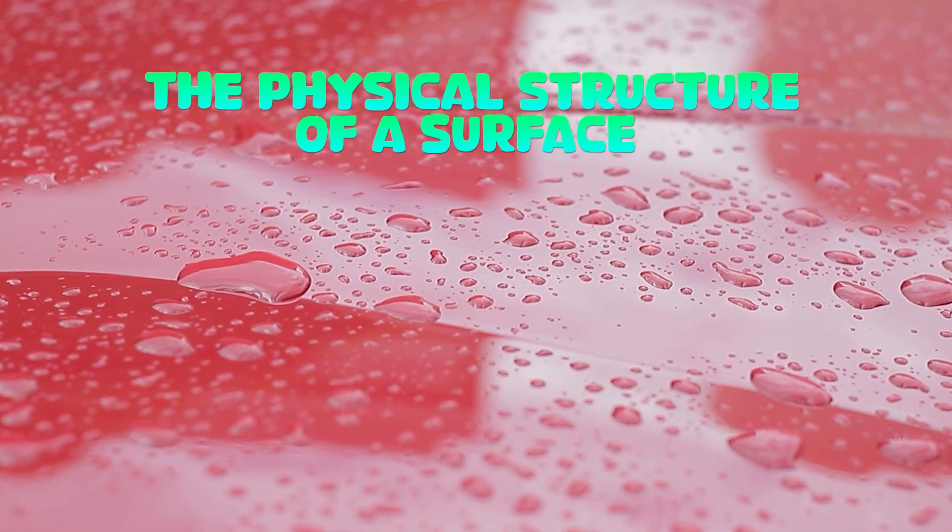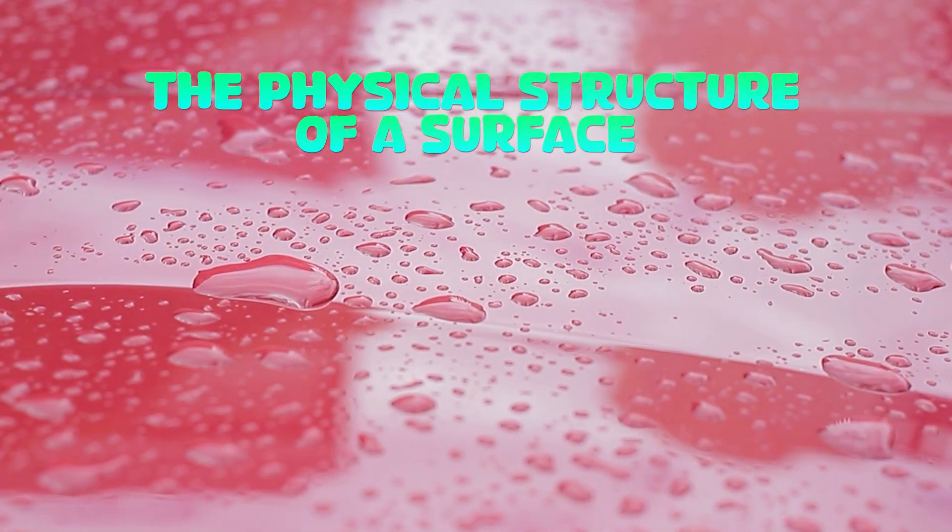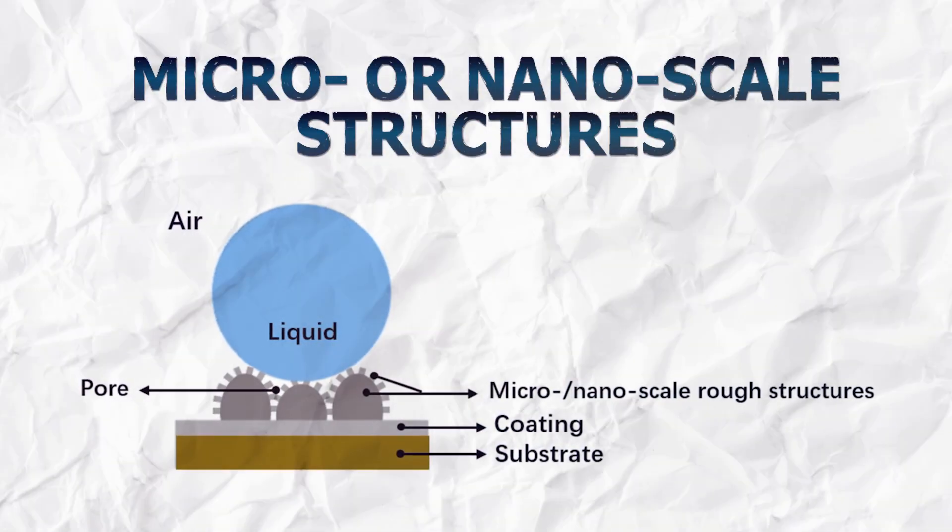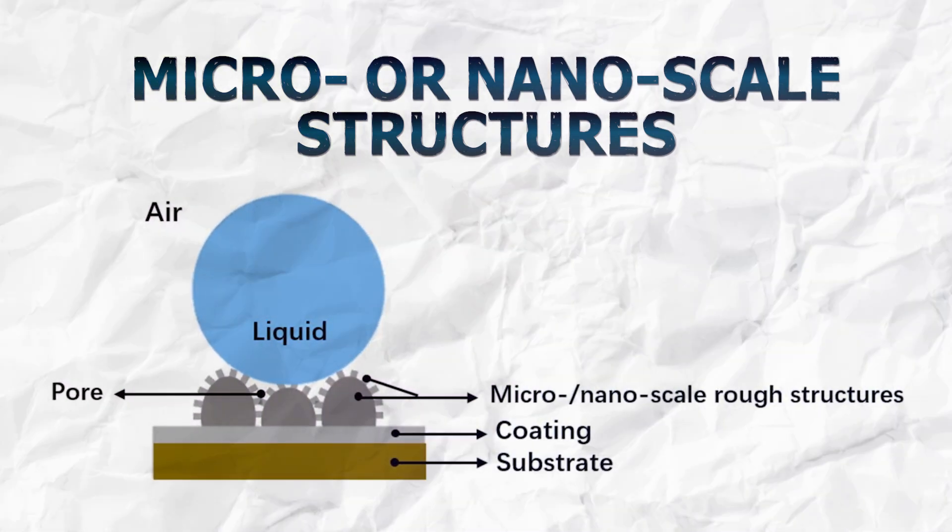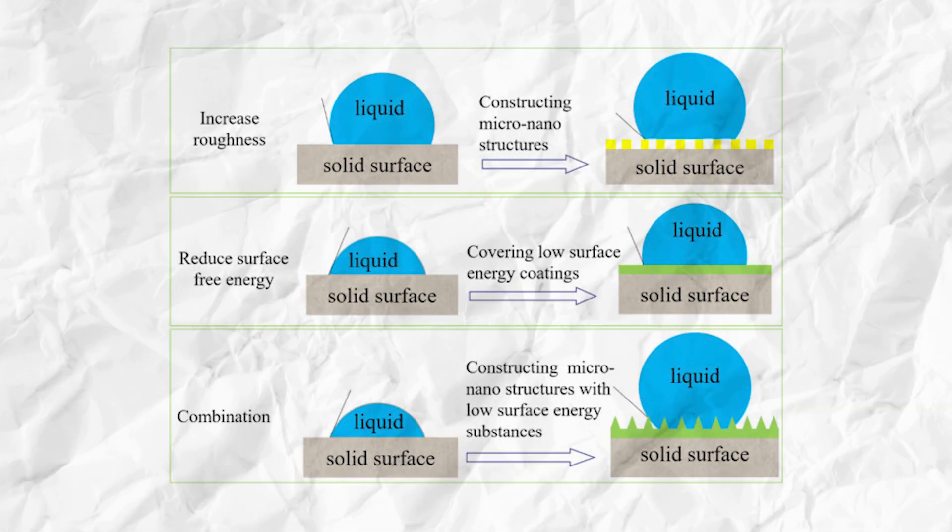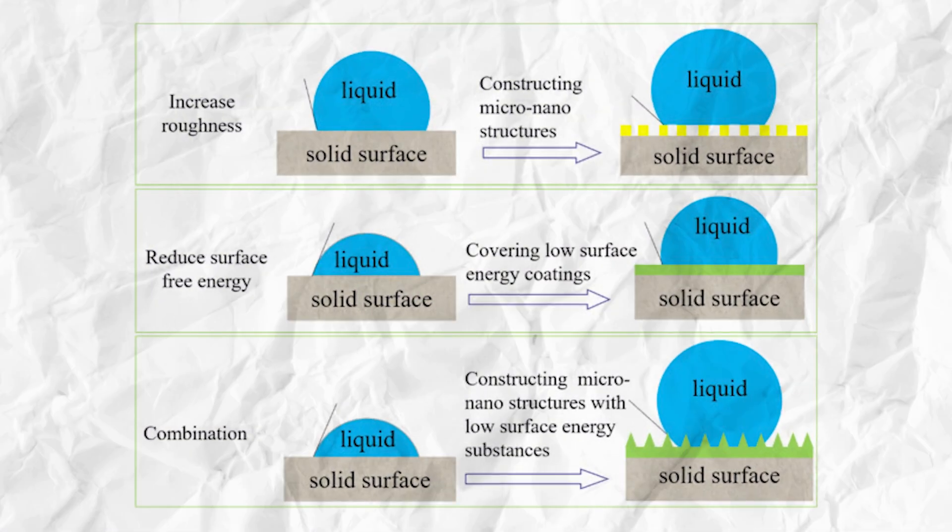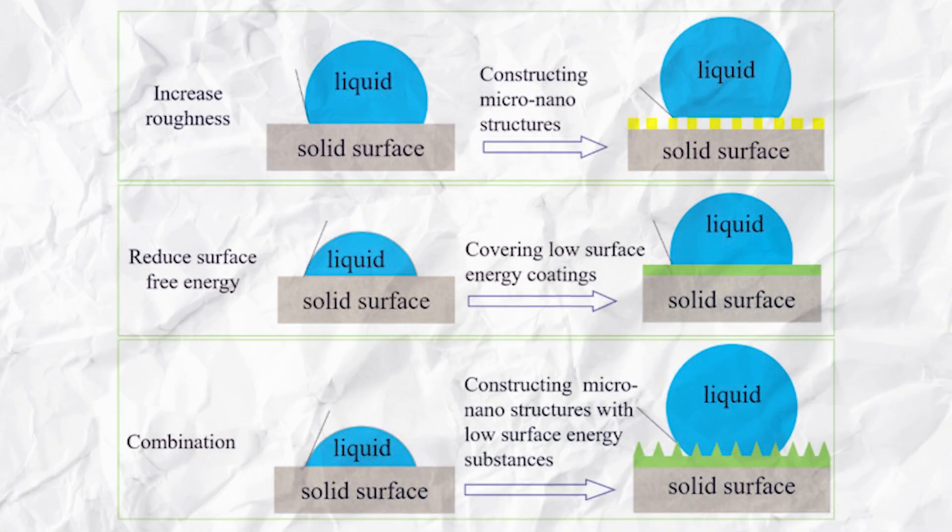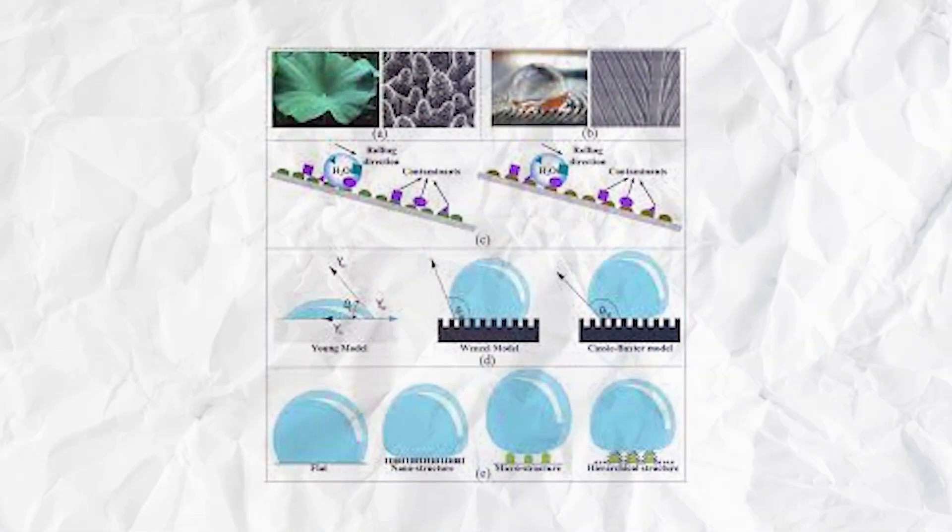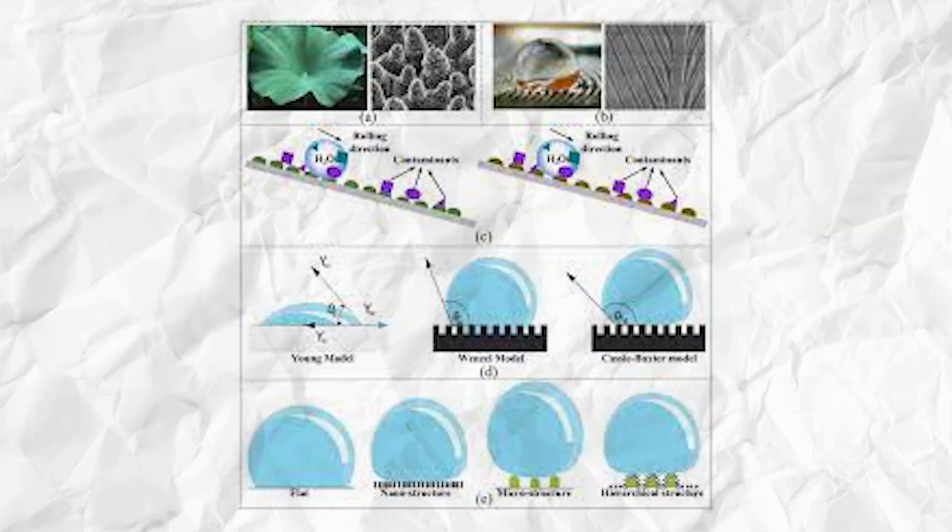But wait, there's more. The physical structure of a surface also plays a pivotal role in rendering it hydrophobic. Many hydrophobic coatings incorporate micro- or nano-scale structures, creating a rough surface texture. This roughness reduces the area of contact between water and the material, minimizing adhesion and promoting the beading effect. The intricate structures at the microscopic level contribute significantly to the overall hydrophobic behavior.